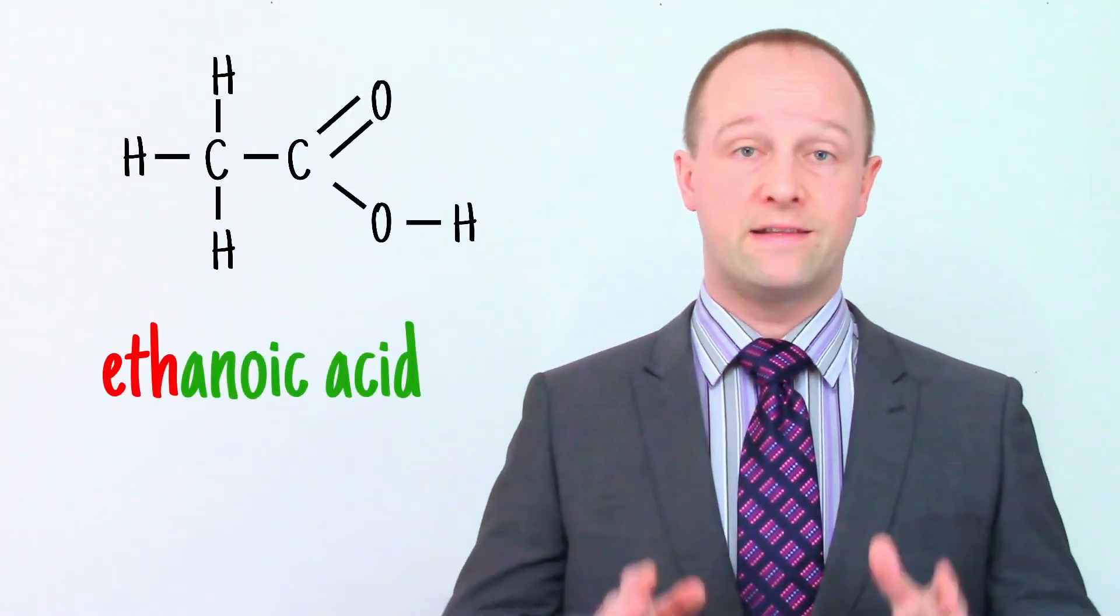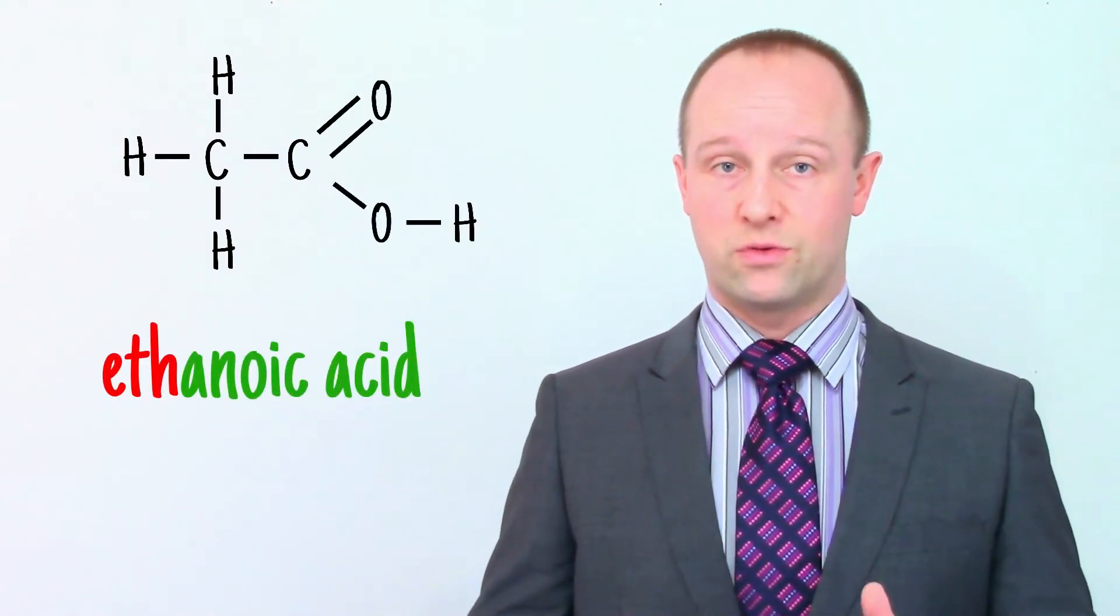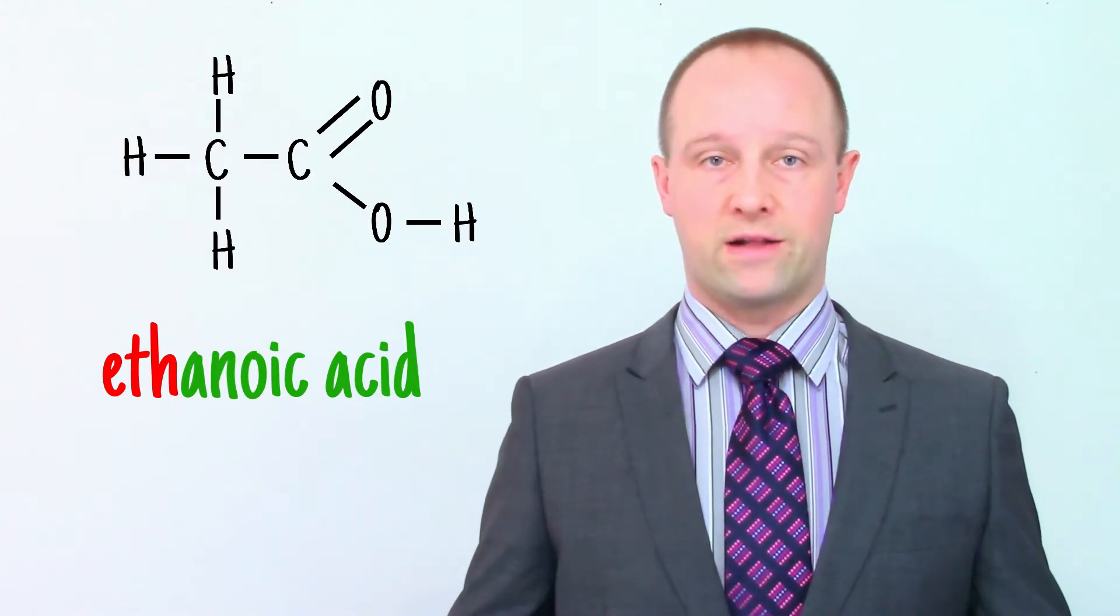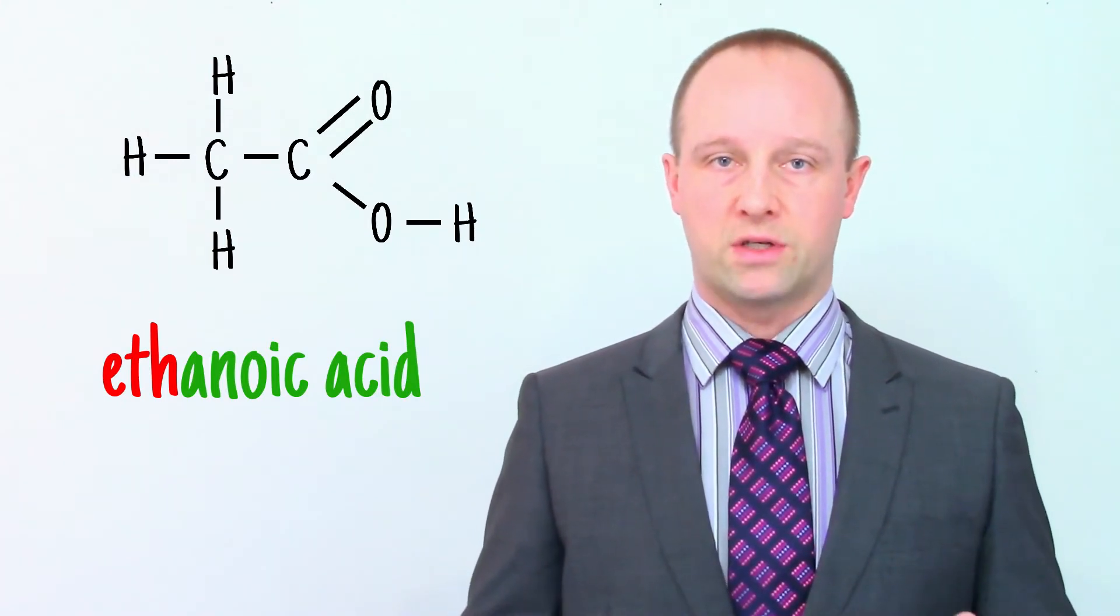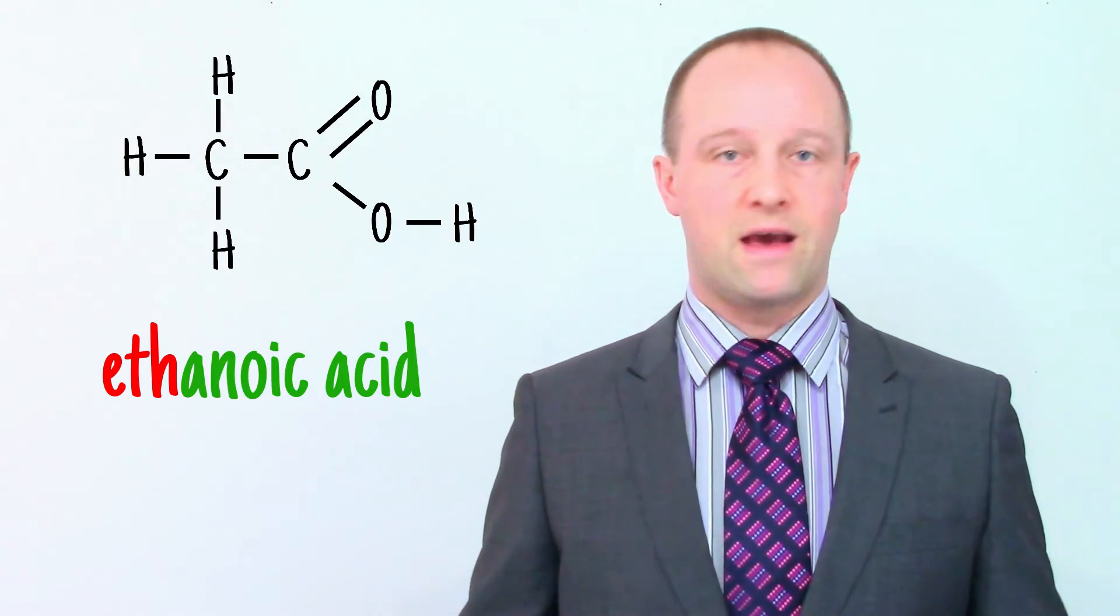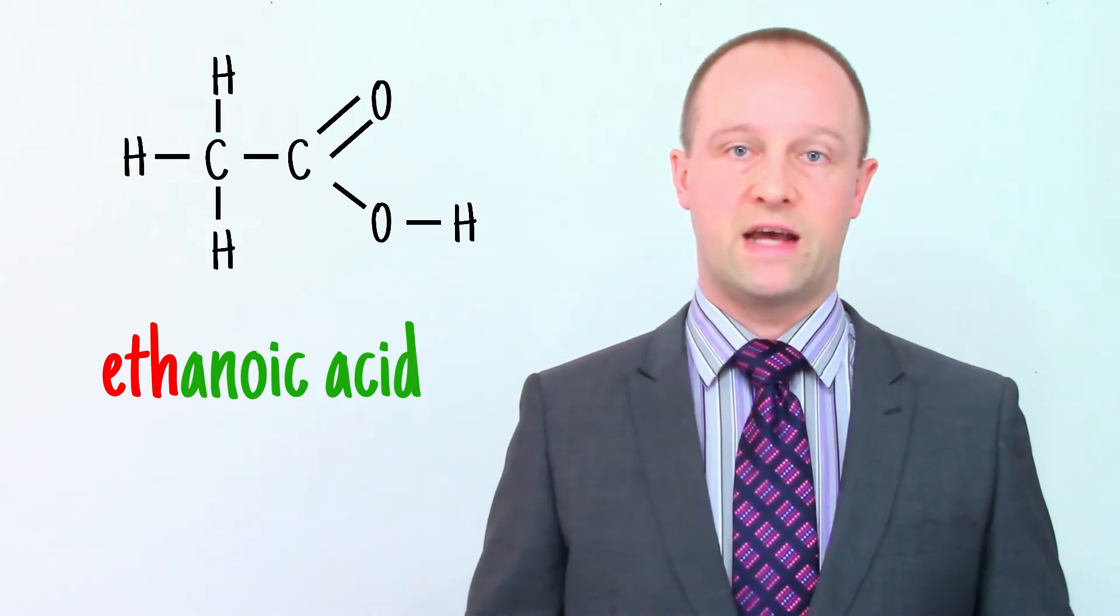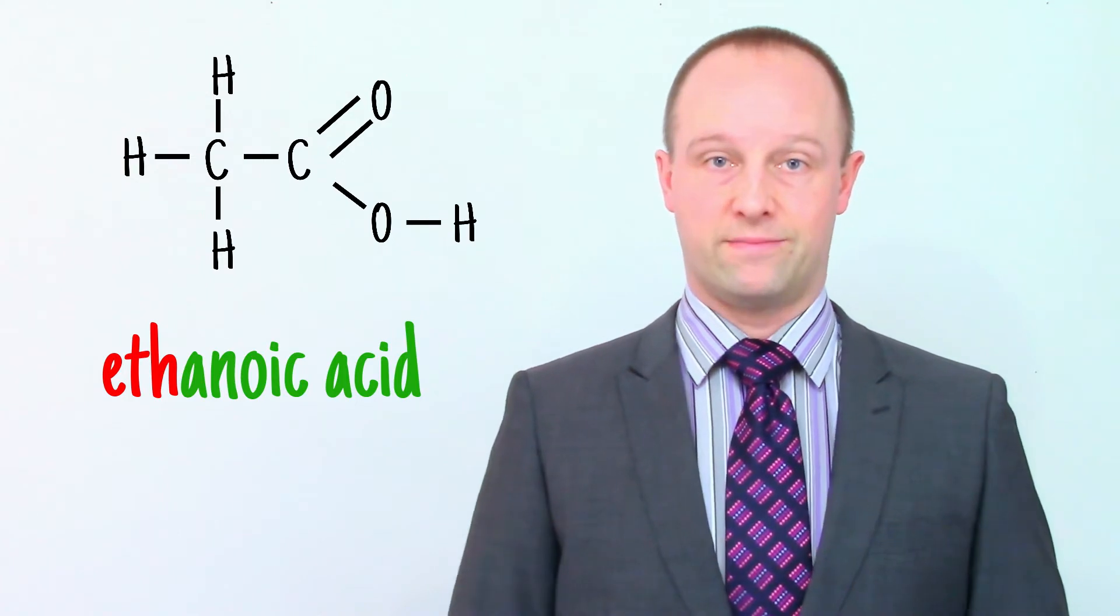If we add this C, O, O, H group to the end of any of our alkanes, we make a carboxylic acid. Add it to methane and we get methanoic acid, as we've just said, ethane gives us ethanoic acid, and so on.